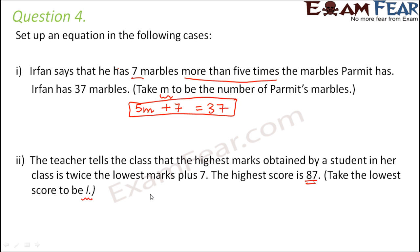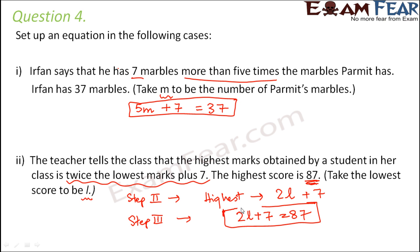What is going to be step 2? In step 2, we are going to establish the relationship. So what is going to be our highest marks? Highest marks would be twice the lowest marks plus 7. So twice the lowest marks, that is 2l plus 7. And finally in step 3, we are going to set up the equation. We are going to equate this highest mark, 2l plus 7, to the given highest score, that is 87. So 2l plus 7 equals 87 would be the equation.